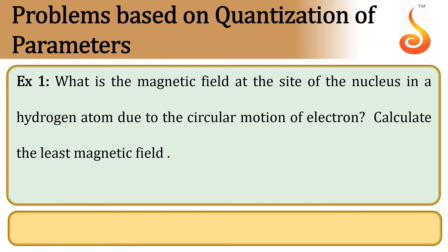Example 1. What is the magnetic field at the site of the nucleus in a hydrogen atom due to the circular motion of the electron? Calculate the least magnetic field. An electron is revolving around the nucleus of a hydrogen atom, and we need to find the magnetic field produced by it.